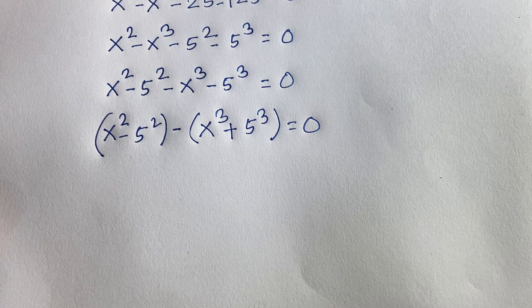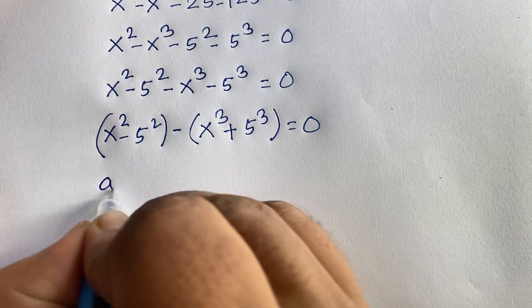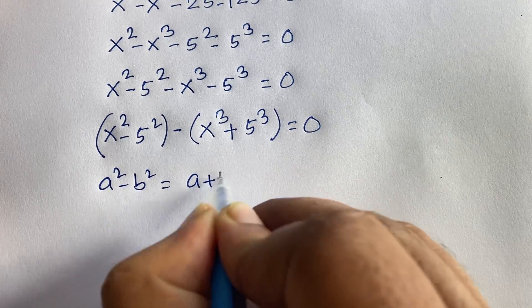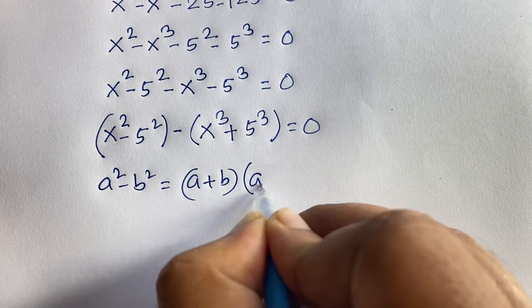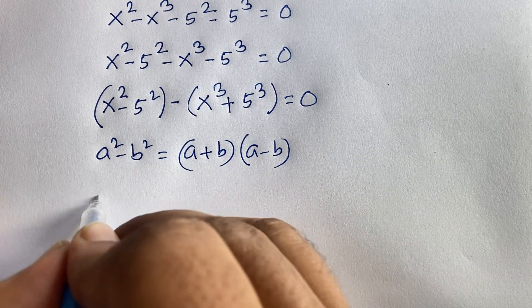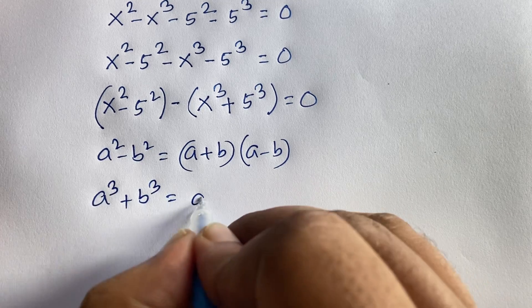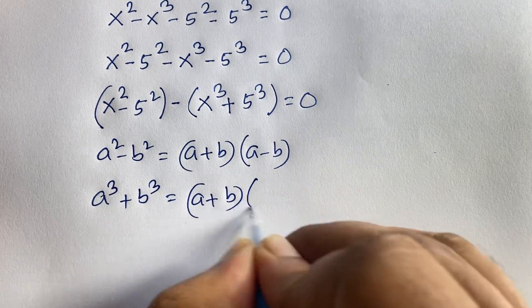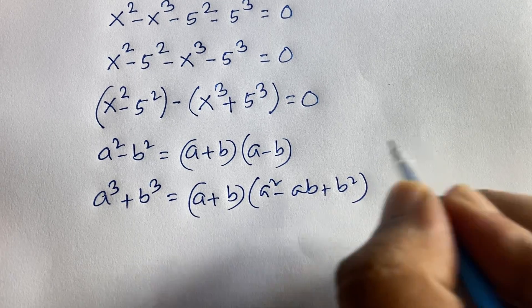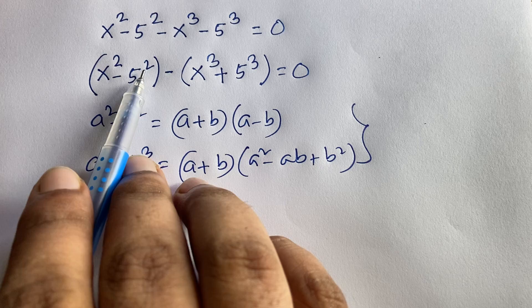Now I apply two algebraic identities. The difference of squares: a squared minus b squared equals (a plus b)(a minus b). And the sum of cubes: a cubed plus b cubed equals (a plus b)(a squared minus ab plus b squared). I will follow both formulas.